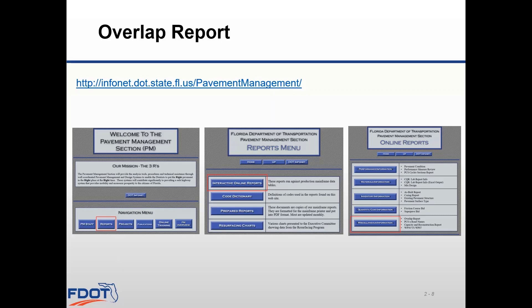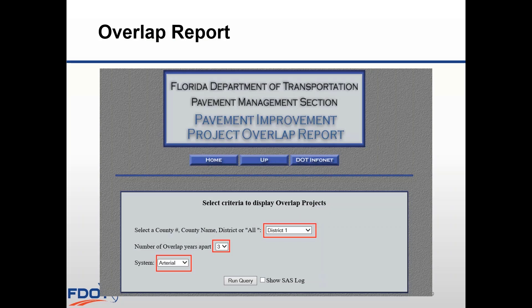From the SharePoint page, click on Reports and then select Interactive Online Reports. On the next screen, select Miscellaneous Information. The Overlap Report is the first report type listed in the bulleted list next to the selection box. Clicking on Miscellaneous Information brings you to another screen where you again select Overlap Report. On that screen, you can select your district, the number of overlap years you'd like to search, and which system you want to look at — Arterial, Interstate, Toll Roads, or Turnpike. Once you make your selections, click Run Query to get your results.